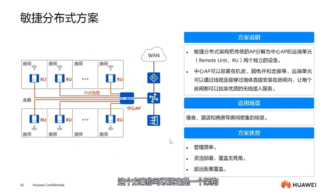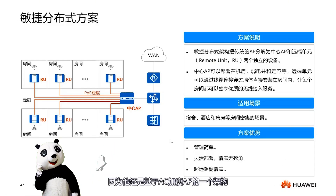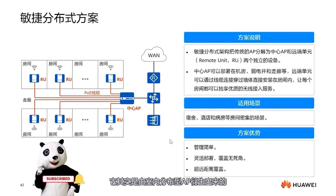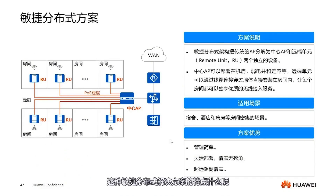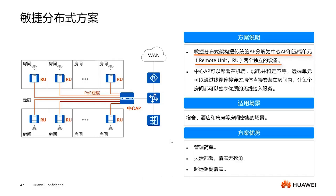Next, let's look at the Agile distributed solution. You could say it's an architecture, or you could say it's not an architecture, because it still relies on the AC plus thin AP architecture. It actually evolved from indoor distributed APs. It breaks traditional APs into a central AP and remote units, or RUs — two separate devices.